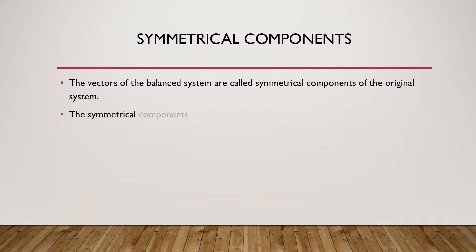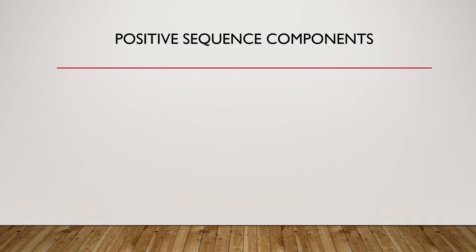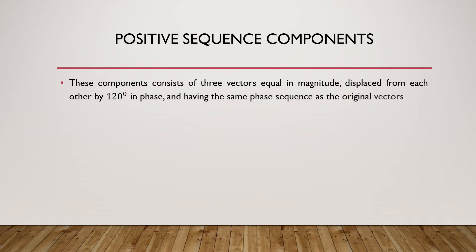The symmetrical components of a three-phase system are positive sequence components, negative sequence components, and zero sequence components. The positive sequence components consist of three vectors which are equal in magnitude, displaced from each other by 120 degrees, and have the same phase sequence as the original vectors.